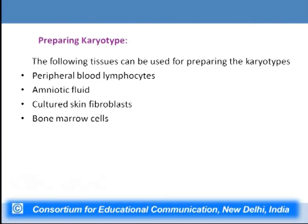To prepare a karyotype, the best cells are those that are repeatedly dividing — rapidly and continuously. These include peripheral blood lymphocytes, cultured skin fibroblasts, cells derived from amniotic fluid, and bone marrow cells. All of these cells keep dividing and are excellent material for karyotype preparation.